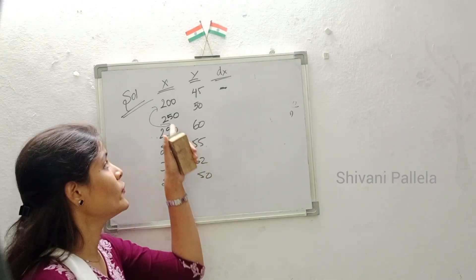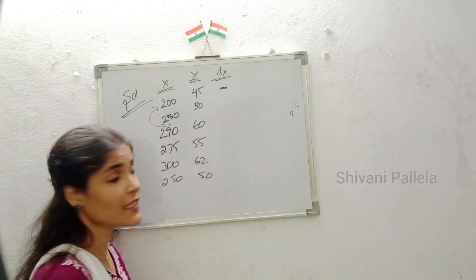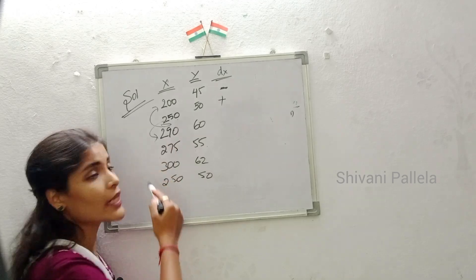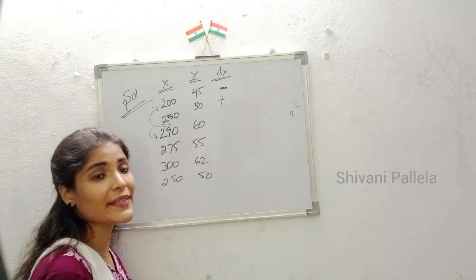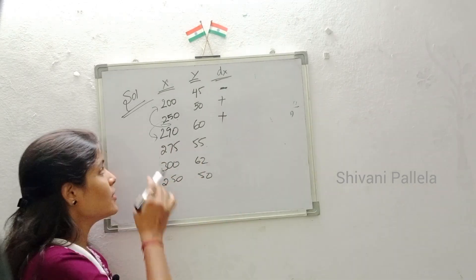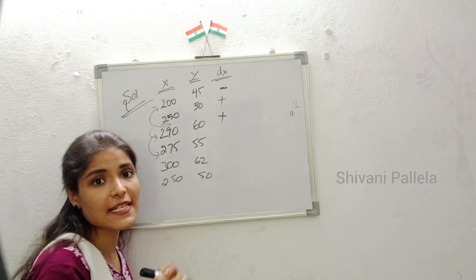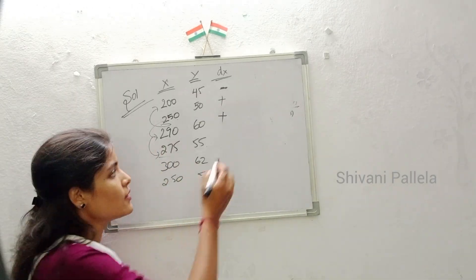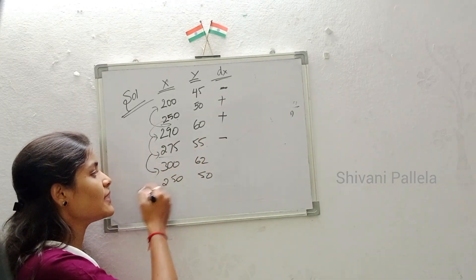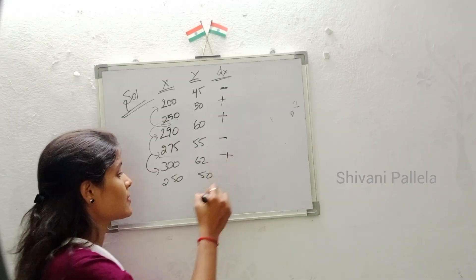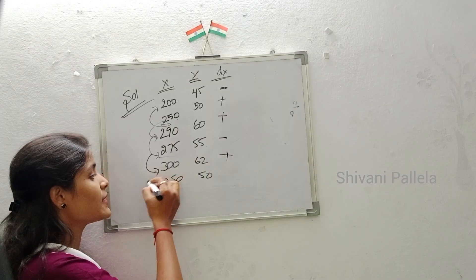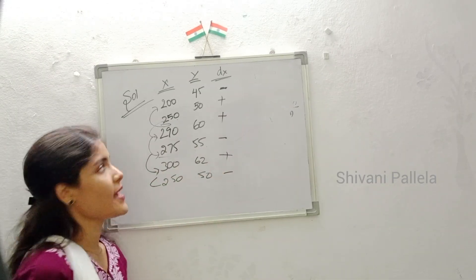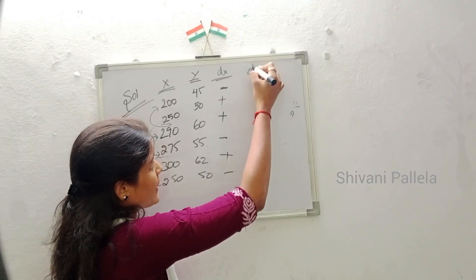Comparing 290 to 250 — 290 is bigger, so plus. Comparing 275 to 290 — 275 is less, so minus. Comparing 300 to 275 — 300 is bigger, so plus. Comparing 250 to 300 — 250 is smaller, so minus. The dx column is now complete.